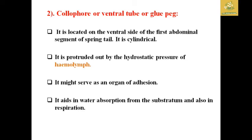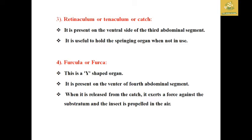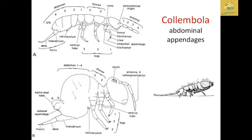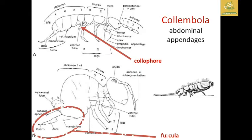The third appendage is the retinaculum or tentacle, also known as the catch. It is present on the ventral side of the third abdominal segment and is useful for holding the spring organ when not in use. The furcula is a Y-shaped organ present on the ventral side of the fourth abdominal segment. When released from the catch, it exerts force against the substratum and propels the insect into the air. In Collembola, you can see the colophore in the first abdominal segment and the furcula and retinaculum in the first to fourth segments.